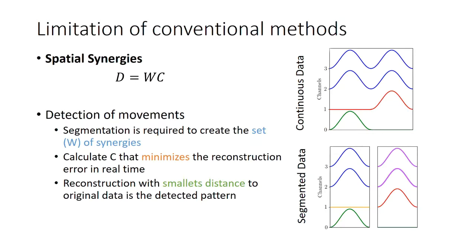The conventional method has some limitations. They use a type of synergy called the spatial synergy, which consists of reconstructing the data using two matrices: W which has the synergies, and C which is the control signal that defines which synergies are active at a specific time. When we extract spatial synergies from continuous data, one pattern is represented by the activation of multiple synergies and sometimes these synergies are shared among different patterns.